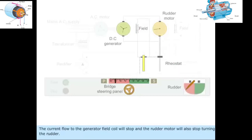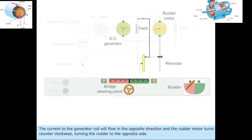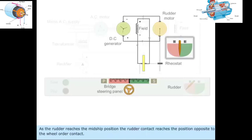Now if the steering wheel is turned to midship, this will move the wheel order contact to midship position. The current to the generator coil will flow in the opposite direction and the rudder motor turns counterclockwise, turning the rudder to the opposite side.